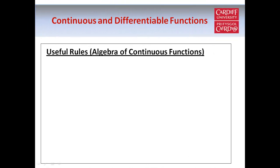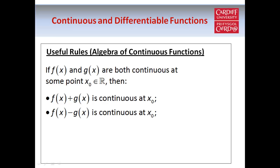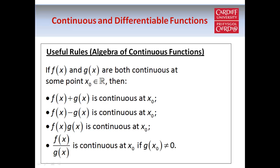Here are some useful rules, sometimes referred to as algebra of continuous functions. If f(x) and g(x) are both continuous at some fixed point x₀, then it can be proved that f(x) + g(x), f(x) − g(x), and f(x) × g(x) are all continuous at x₀. And f(x) / g(x) is continuous at x₀, provided that g(x₀) ≠ 0, so that we don't have a division by zero.